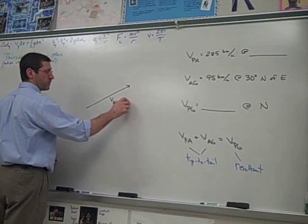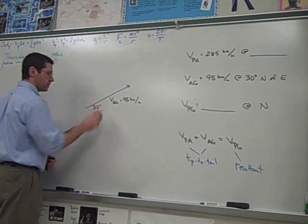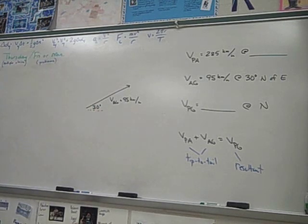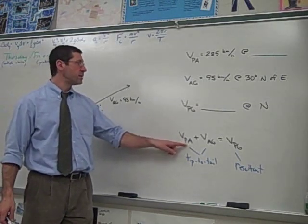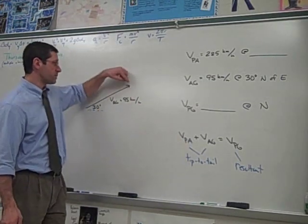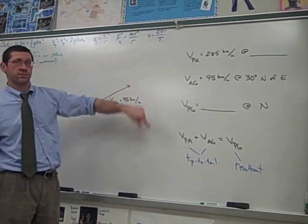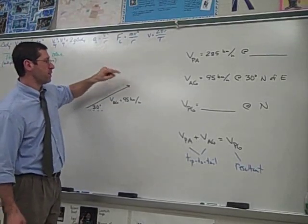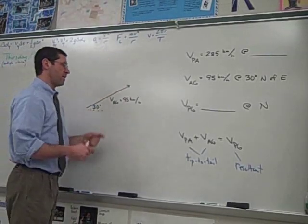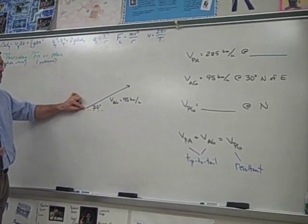We know this vector, so if you can picture the air is blowing that way, that's the air relative to the ground, moving 95 kilometers per hour 30 degrees north of east. And to that we need to add the other vector, VPA, tip to tail. So that means VPA is going to start here and it's going to go off in some direction - that's what we want to find.